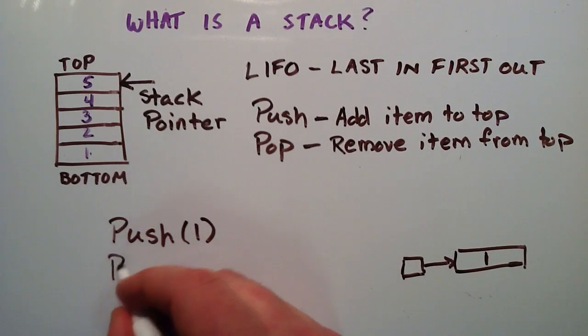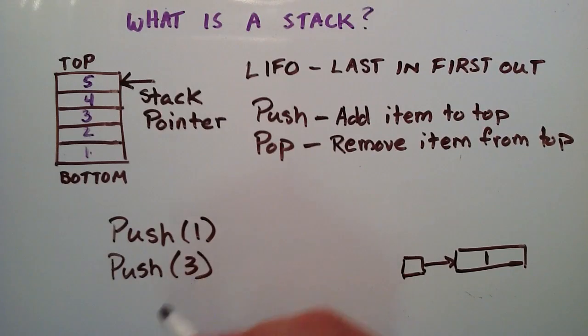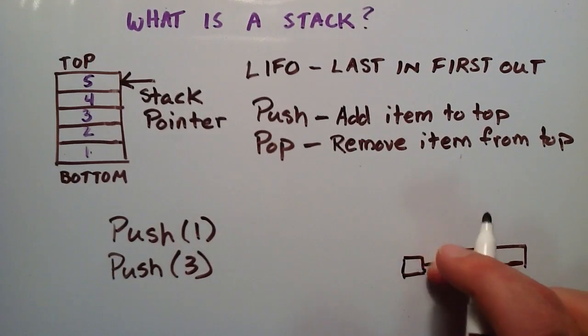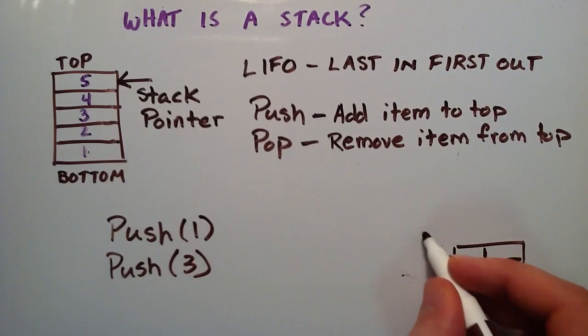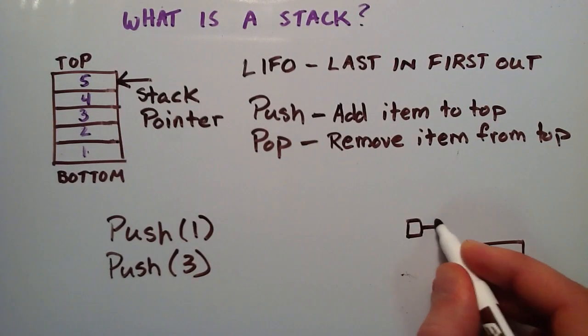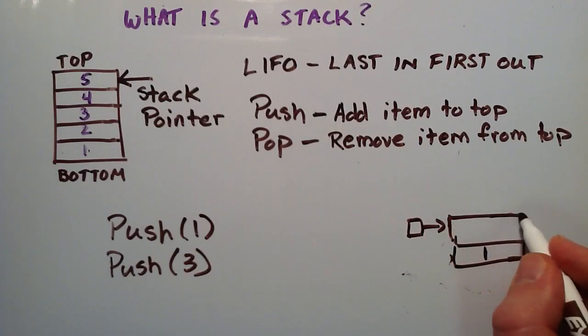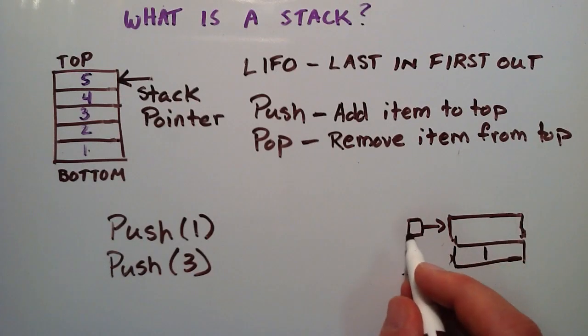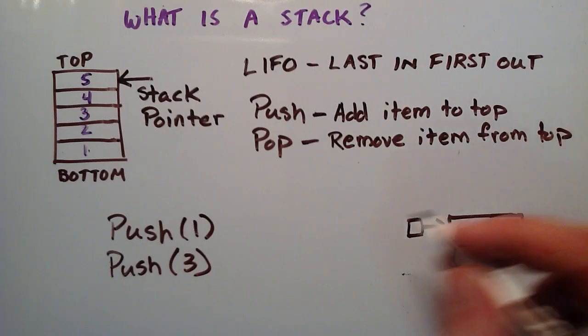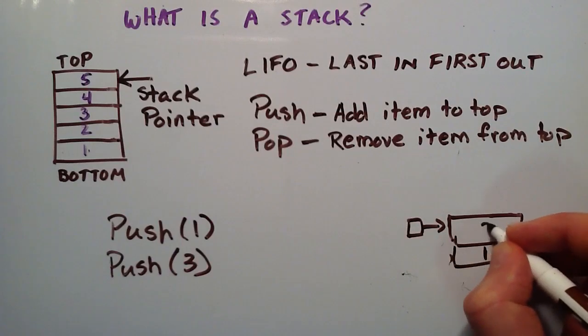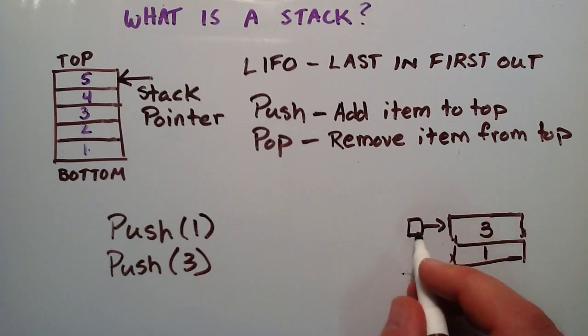Then if I wanted to push 3, what would happen is my stack pointer would move up to the next location. So, it would create some sort of new node here and then our stack pointer would point to that location and then we would place the value 3 into the new node that we created and now this is the top of the stack.